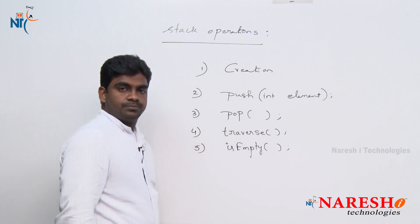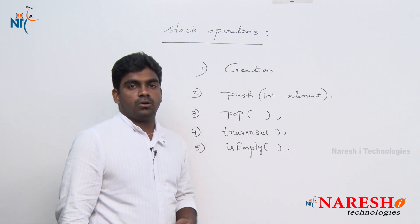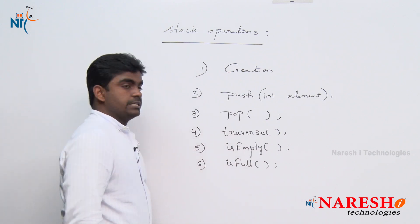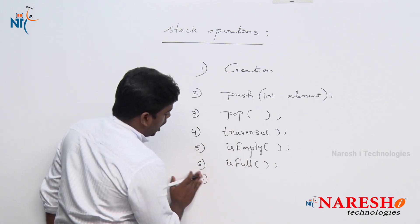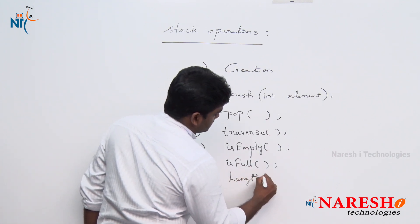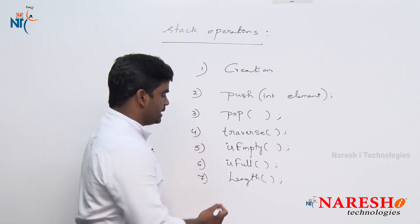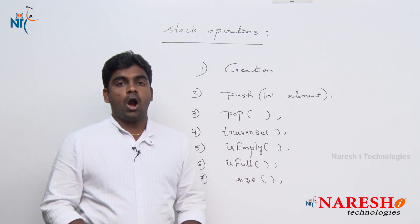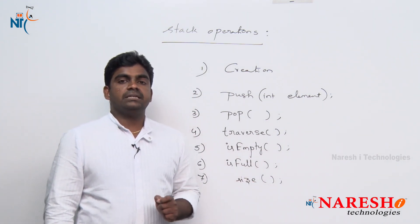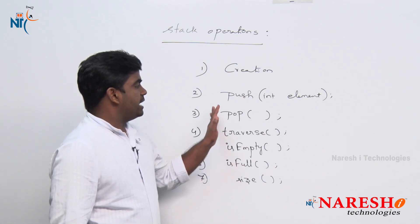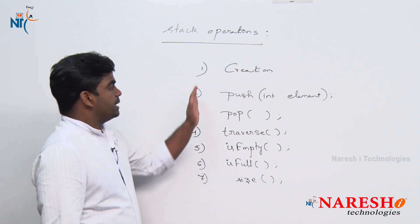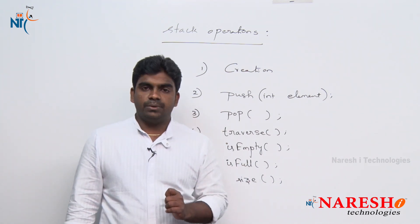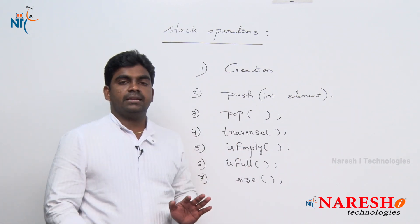Some additional optional functions we also implement: fifth, is empty — checking if the stack is empty or contains elements. Sixth, is full — checking if the stack is full. Seventh, size or length — how many elements are present in the stack. Writing the logic for all these functions is nothing but the stack implementation. Once you implement all these things, the stack is ready.